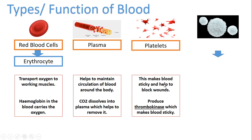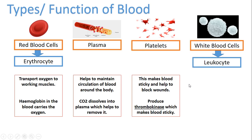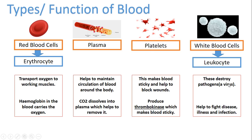We also have platelets, which make blood go really sticky, helping to block up wounds. They do this by producing an enzyme called thrombokinase, which makes your blood sticky. The final blood cell you need to know about are white blood cells, also known as leukocytes — they destroy viruses and pathogens and help to fight disease, illness, and infection. All of these blood cells play a role in sport: red blood cells to transport oxygen so muscles can work, plasma to make sure it travels safely, platelets so if you get injured you can quickly recover, and white blood cells to prevent illnesses from stopping us from playing sport.